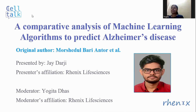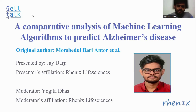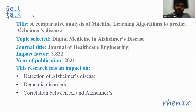So without further delay, over to you Jai. Thank you so much for my introduction. Hello everyone. I'm Jai Darji and I'll be presenting a comparative analysis of machine learning algorithms to predict Alzheimer's disease, which is originally authored by Morshidul Bari and others. This paper is related to digital medicine in Alzheimer's disease and was published in the Journal of Healthcare Engineering in 2021, which has an impact factor of 3.82.